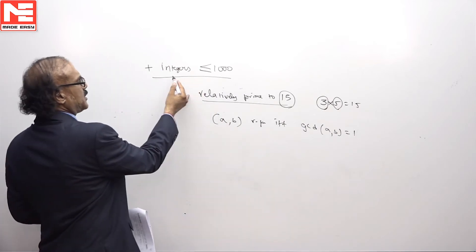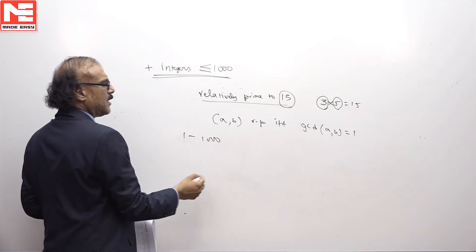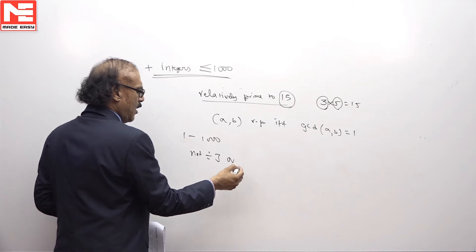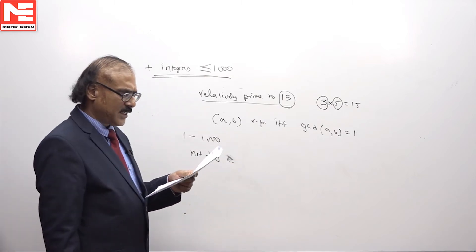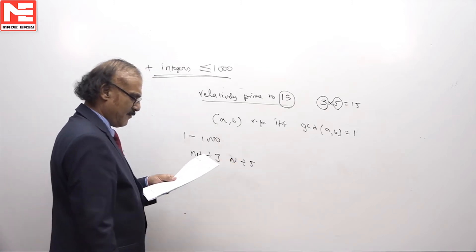We are effectively asking the question: how many numbers from 1 to 1000 are not divisible by 3 as well as not divisible by 5?